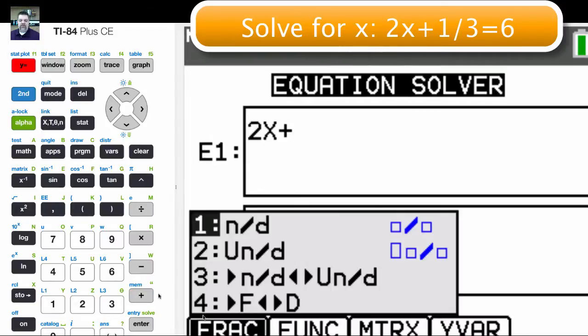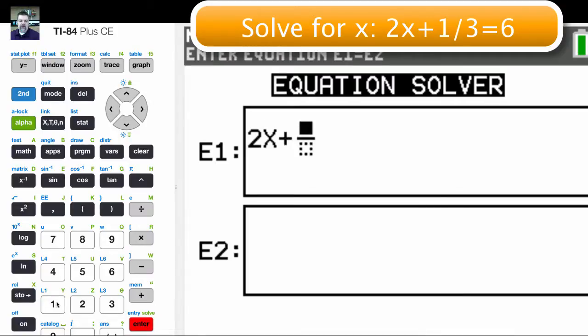And that will pull up this little function menu. I could go in and hit fraction and stuff, but I'm going to choose option number 1. And then I'm going to put 1 over 3. And then that's that equation. And then I'm just going to put 6 here.